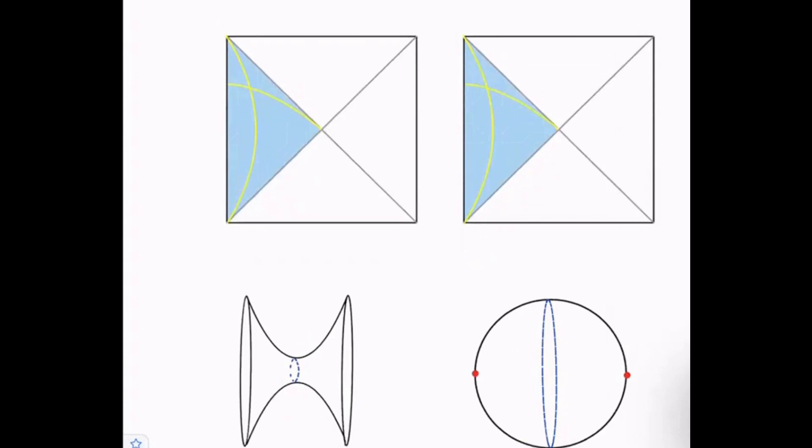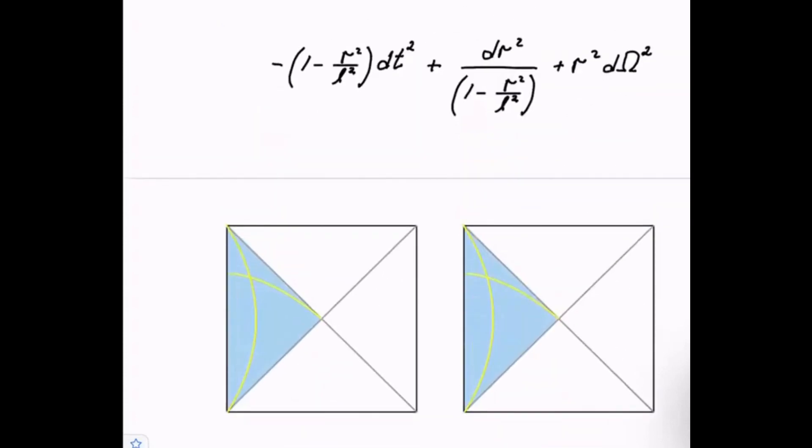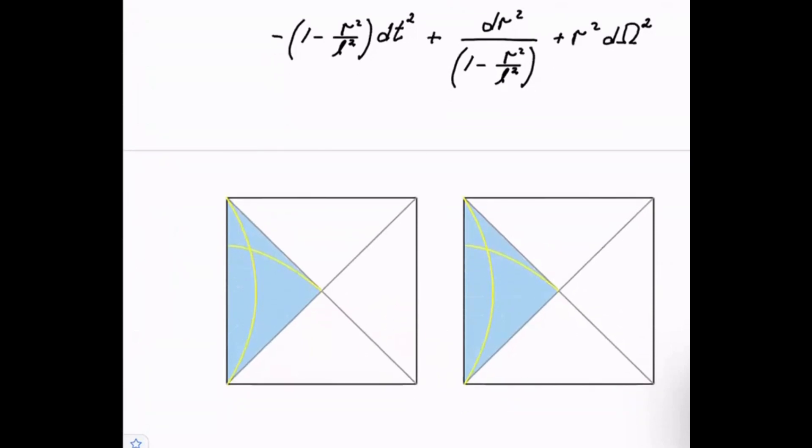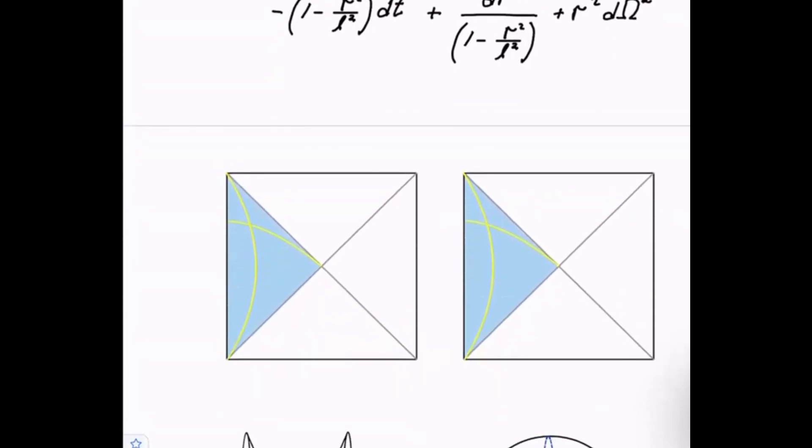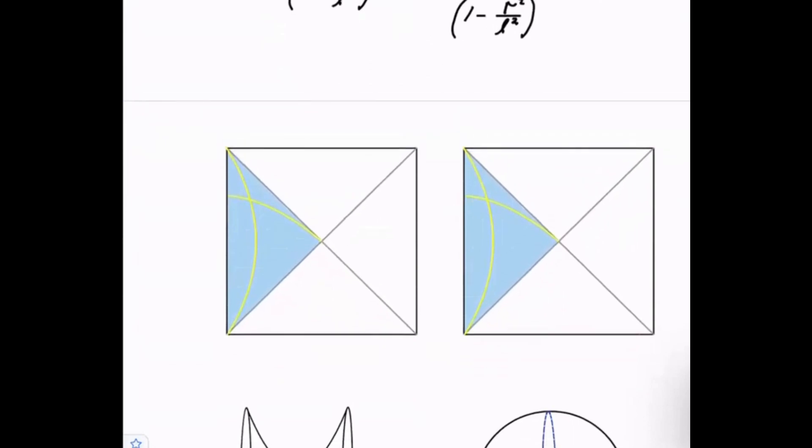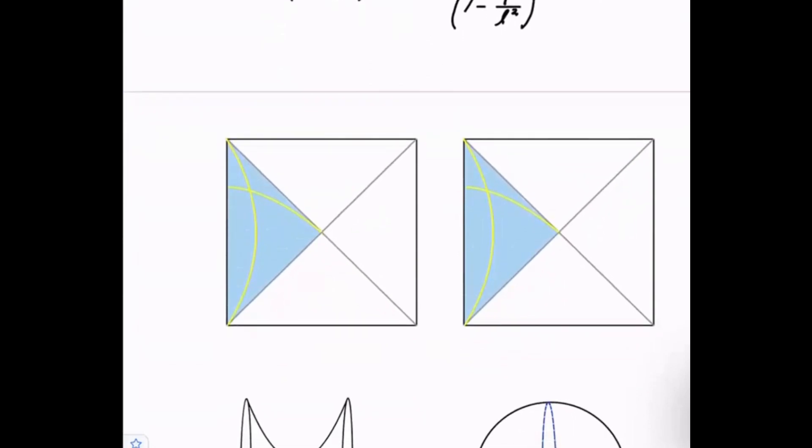Here are the two Penrose diagrams. Let me not give away the punchline. There are two Penrose diagrams. They're completely different geometries. The left one is the two-sided black hole, the two-sided ADS black hole, so-called two-sided black hole. And the right side is de Sitter space. Notice that they look exactly the same. They have exactly the same causal structure, but the geometries are completely different.